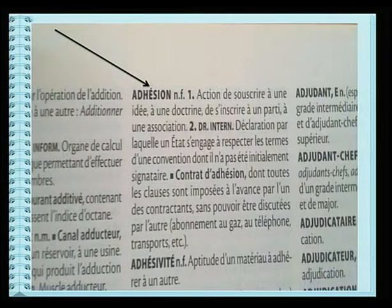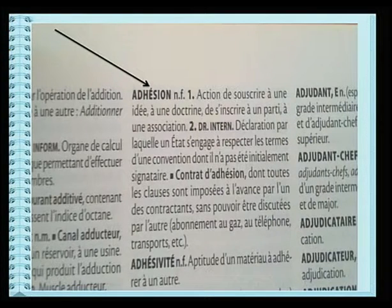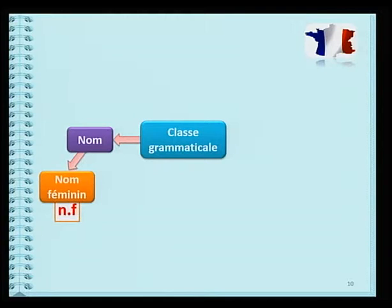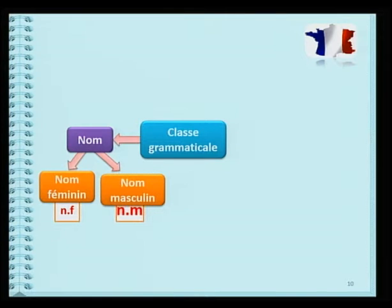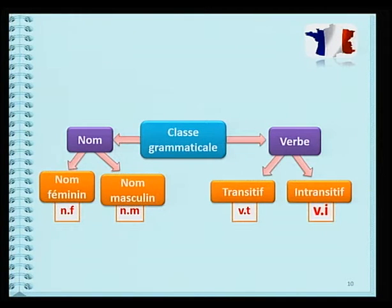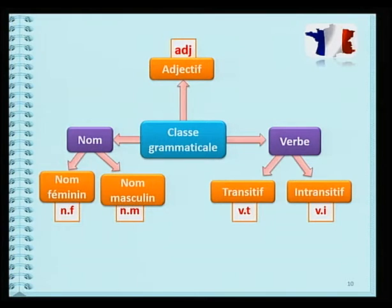On trouve une abréviation, un point F point, tout près du mot adhésion. C'est la classe grammaticale du mot adhésion. Il indique que c'est un nom, un nom féminin. Retrouvons les autres abréviations générales du dictionnaire. Nom féminin: n.f. Nom masculin: n.m. Le verbe transitif: v.t. Le verbe intransitif: v.i. Pour l'adjectif: adj. Pour l'adverbe: adv.